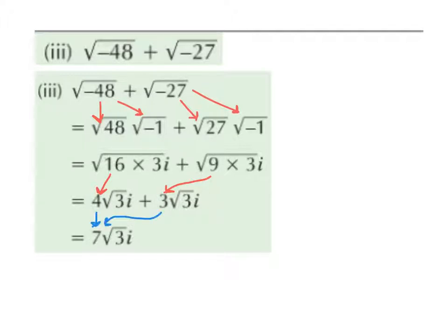This is very similar to saying 4x plus 3x gives us 7x, or 4y plus 3y gives us 7y. Because we have root 3i stuck onto both, we just add the numbers in front: 4 plus 3 gives us 7.